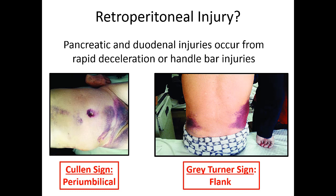Retroperitoneal injuries involve organs located deeper in the abdomen — the kidneys, pancreas, and larger parts of the large intestine. The most common injuries here are pancreatic, duodenal, and kidney injuries, most commonly seen in children. Late signs to look for include Cullen's sign — bruising around the umbilicus — which can indicate a retroperitoneal injury, and Grey Turner's sign — bruising along the flanks — usually from crush-type injuries or rapid deceleration.